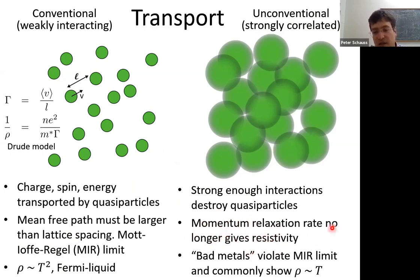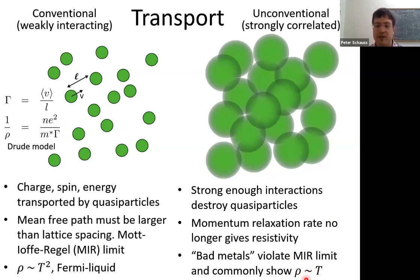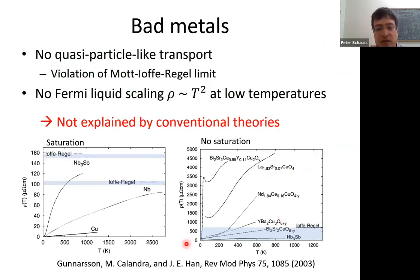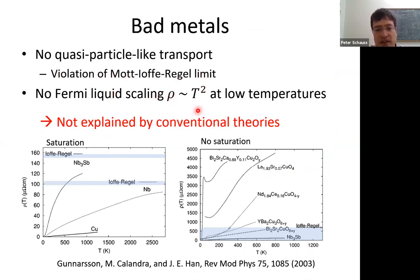We wanted to look at a strongly interacting transport experiment. Let me distinguish between two types of transport. In conventional or weakly interacting transport, charge, spin, and energy are transported by quasi-particles with velocity V and mean free path L, giving a scattering rate that determines resistivity. On a lattice there is a minimum mean free path on the order of the lattice spacing, giving a lower limit on resistivity called the Mooij limit. At very low temperatures you get Fermi liquid-like resistivity scaling as T-squared. With strong enough interactions, it's believed quasi-particles are destroyed — a 'soup' of particles — giving unconventional transport. The so-called bad metals violate the Mooij limit and often show resistivity scaling linearly with temperature at low temperatures. Bad metals are defined by violation of the Mooij limit and this non-Fermi-liquid-like scaling of resistivity.